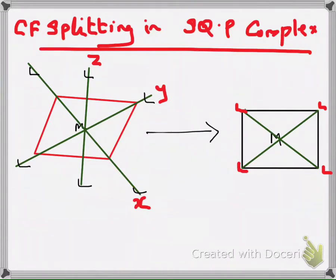Tetrahedral and square planar complexes do not have any direct relation, but the structure of square planar complexes can be explained from the octahedral complex. First, you have to think about the shape of the octahedral complex, how the ligands approach the central metal ion, and how they produce crystal field splitting. After that, you can come to the splitting of the square planar complex.